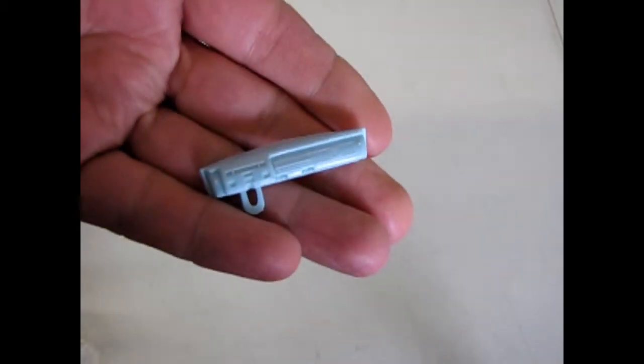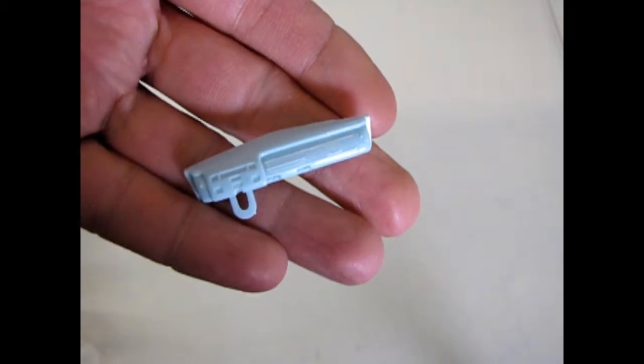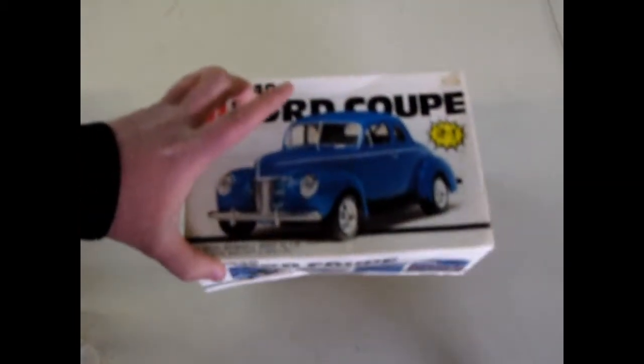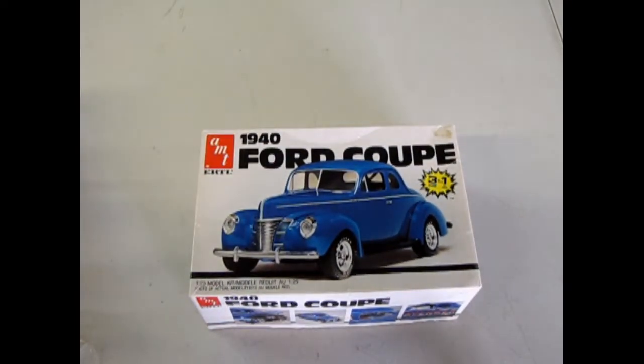And then here we have our dashboard with that cool 1940s radiator type of look. And that completes our look at what's in the box for the 1940 Ford Coupe.